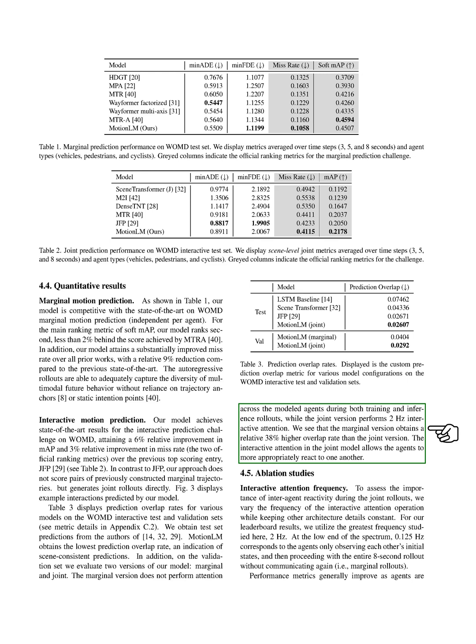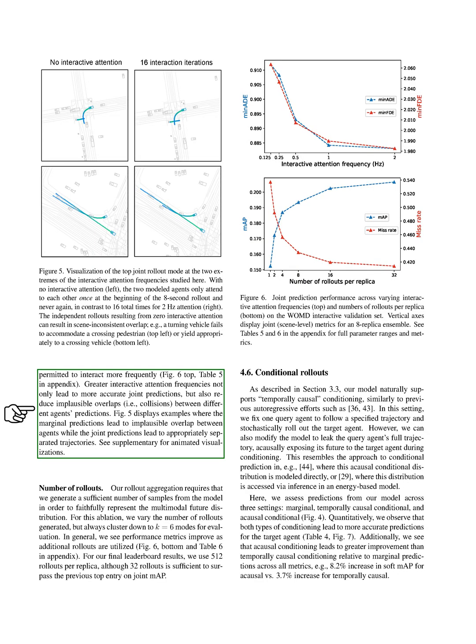This suggests that the interactive attention allows the agents to respond to each other more effectively. We also studied the impact of the frequency of interactive attention during the joint rollout. We found that the performance generally improved as the agents were allowed to interact more frequently. Higher interactive attention frequencies not only led to more accurate joint predictions but also reduced the likelihood of implausible overlaps, or collisions, between different agents' predictions. The number of rollouts we generate is also important. We need to generate enough samples from the model to accurately represent the multimodal future distribution. We found that the performance improved as we used more rollouts. For our final results, we used 512 rollouts per replica, but we found that 32 rollouts were enough to surpass the previous top entry on joint map.